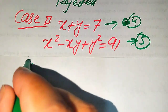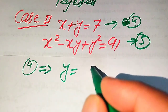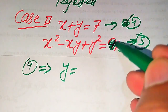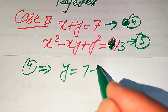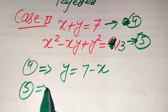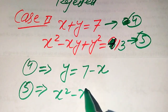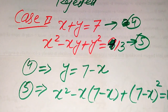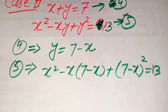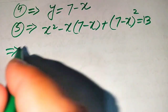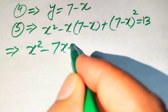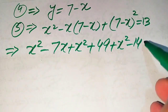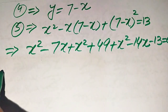In Case 2 we use the factorization 7 × 13 = 91, giving equation 4: x + y = 7, and equation 5: x² − xy + y² = 13. From equation 4 we get y = 7 − x and substitute into equation 5: x² − x(7 − x) + (7 − x)² = 13, which expands to x² − 7x + x² + 49 + x² − 14x − 13 = 0.